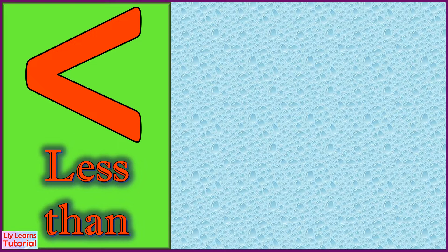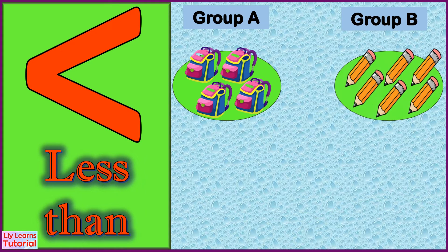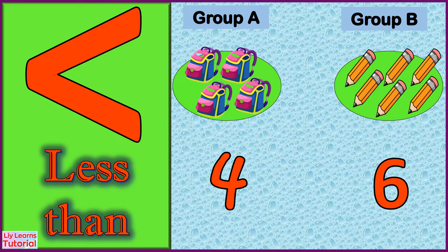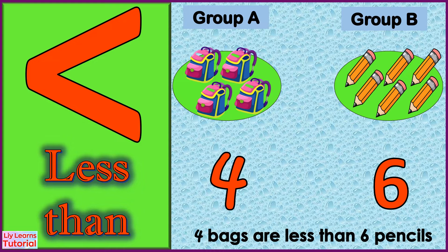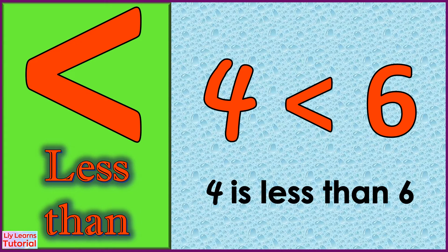Let's look at these examples — Group A and Group B. Group A has four bags, while Group B has six pencils. Four bags are less than six pencils, so we use the less than sign. We read this as: four is less than six.